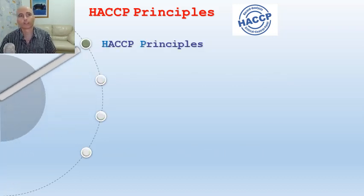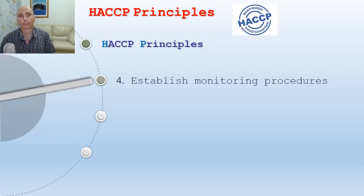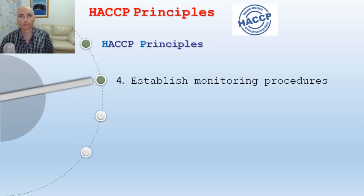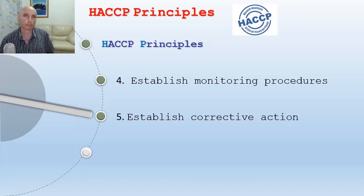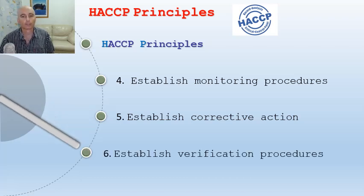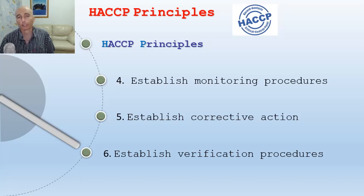Number four: monitor those procedures. For the cool room, you would monitor it to make sure it stays between 1 and 5 degrees and document the temperature. Number five: establish corrective action. If something is found to be wrong — like the temperature isn't right — you would get the fridge repaired or change the system to make it safer. Number six: every month or so you actually have to verify that the whole system is working, and we'll talk about that later.